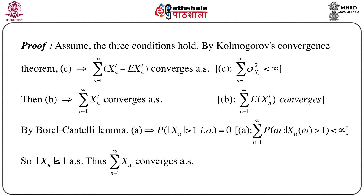Recalling condition A and applying the Borel–Cantelli lemma, we get that the probability that the modulus of x_n is greater than 1 occurs infinitely often equals 0. So naturally the modulus of x_n is less than or equal to 1 almost surely, and hence the summation x_n converges almost surely. This part is fairly straightforward by applying Kolmogorov's convergence theorem and the Borel–Cantelli lemma.